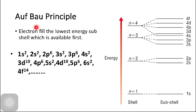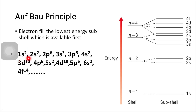According to the Aufbau principle, electrons fill the lowest energy sub-shell available first. The lowest energy sub-shell is 1S, so electrons first fill 1S, then 2S, then 2P. Once 2P is completely filled, electrons then fill the 3S sub-shell, followed by the 3P sub-shell, and so on.